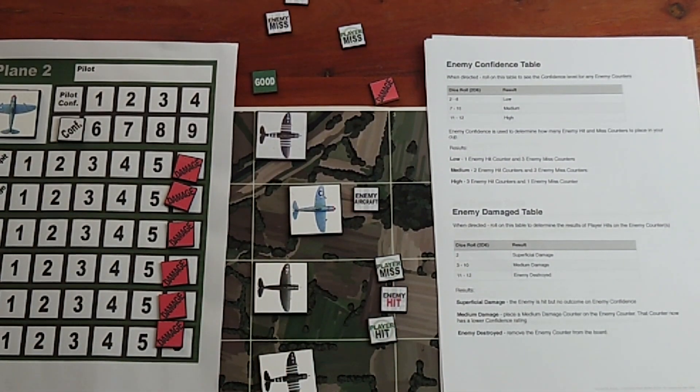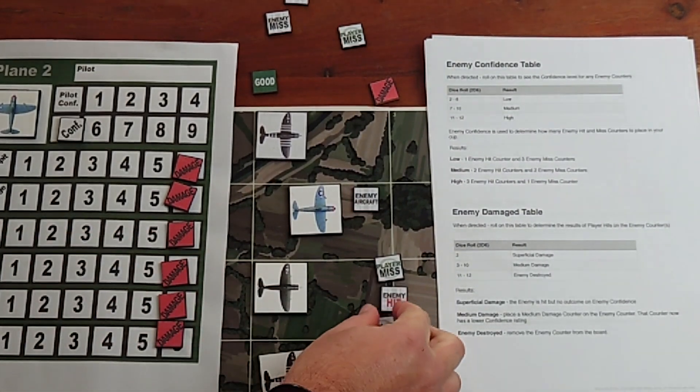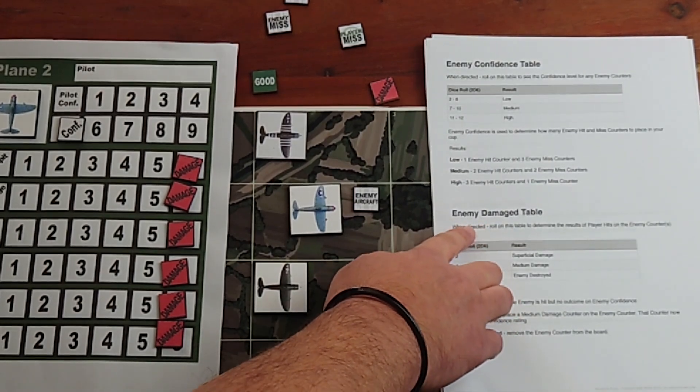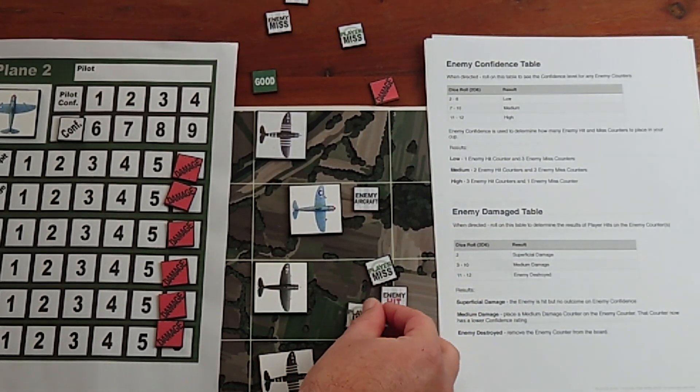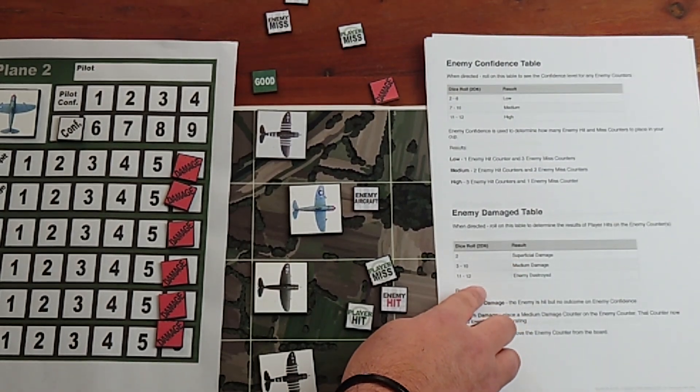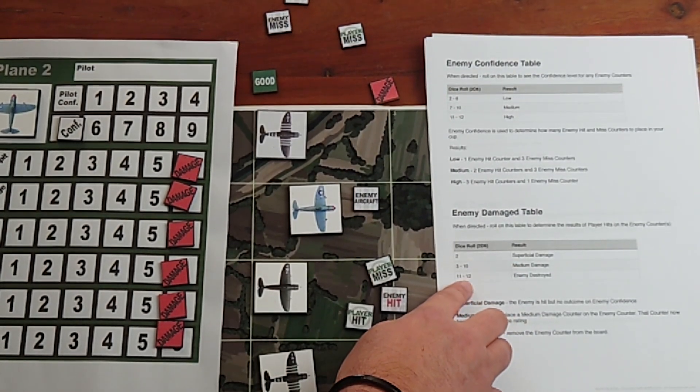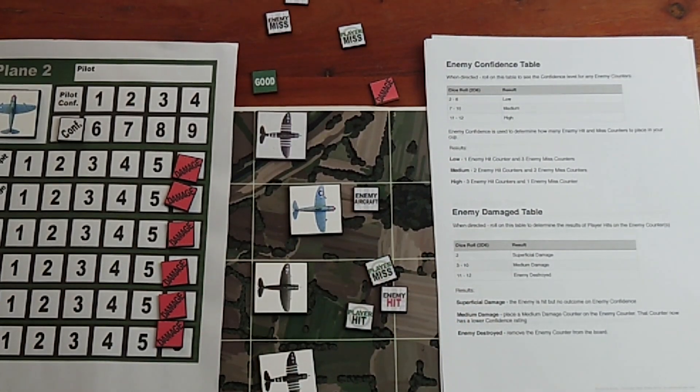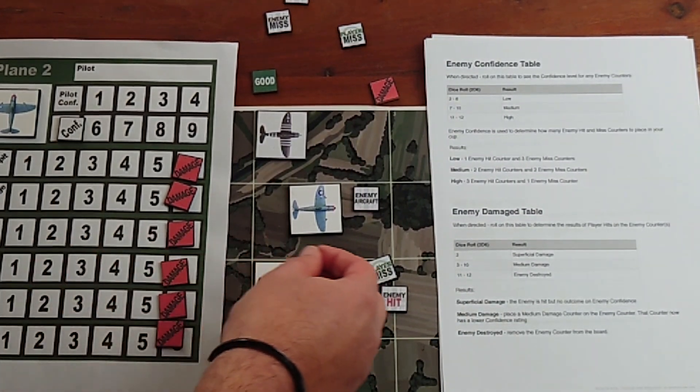For every player hit, I will roll on the enemy damaged table. If I get an 11 to 12 on two dice, then I have destroyed the enemy and the enemy would be removed.